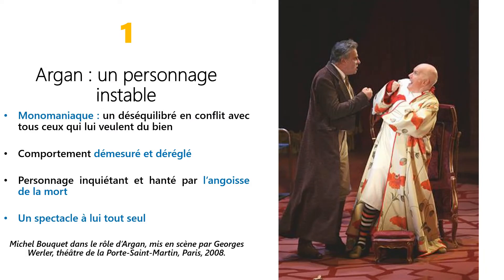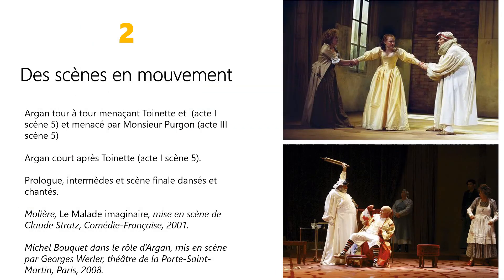Obsédé par l'idée de la mort, Argan met en scène sa folie de manière ostentatoire. Il est au centre de la comédie, il est un spectacle à lui tout seul, comme le prouve la scène d'exposition, mais également toutes les scènes où il se retrouve en conflit avec les autres, ne cessant jamais de jouer la comédie du malade imaginaire. Par ailleurs, Molière multiplie les scènes en mouvement. Dans l'acte 1, scène 5, Argan menace et poursuit Toinette et dans l'acte 3, scène 5, c'est Argan qui est menacé par M. Purgon. Dans le prologue et les trois intermèdes musicaux, les personnages sur scène chantent, dansent et sont en mouvement.